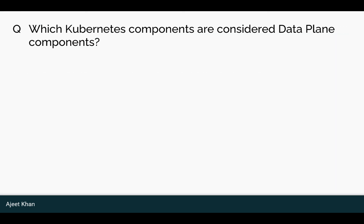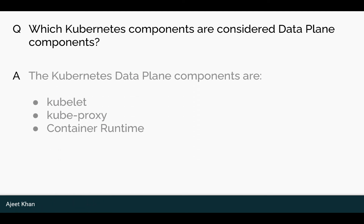Which Kubernetes components are considered data plane components? The Kubernetes data plane components are: Kubelet, Kube Proxy, and Container Runtime.